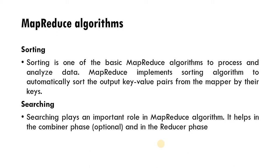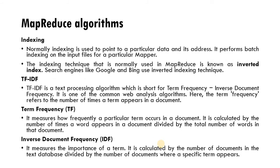We can easily access data after sorting, which is why sorting is the first operation performed. The second algorithm is searching. Searching plays an important role in MapReduce — it helps in the combiner phase and in the reducer phase. When we want to find one particular data item, based on a key value we can easily search for it from the database. Searching is a very important term in MapReduce.